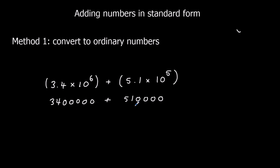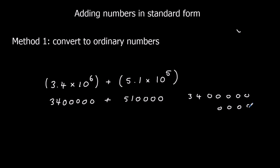So then we can add these two numbers up as we would any other number. We line them up — the first number has 5 zeros, and the second has 4 zeros. Then 51 on top.